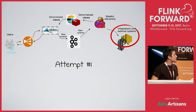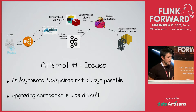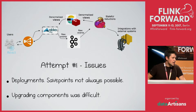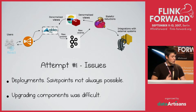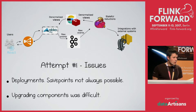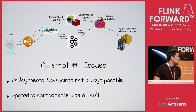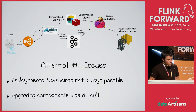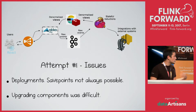That was the first attempt at a system like this, but it had a few issues. The first was deployments — it's not always possible to have save points. In a young startup like ours, we change our mind all the time, adding feature after feature, so the state in Flink changes continuously. The fact that we couldn't always run from a save point was a big problem. So we had to do deployments from scratch and replay the log.